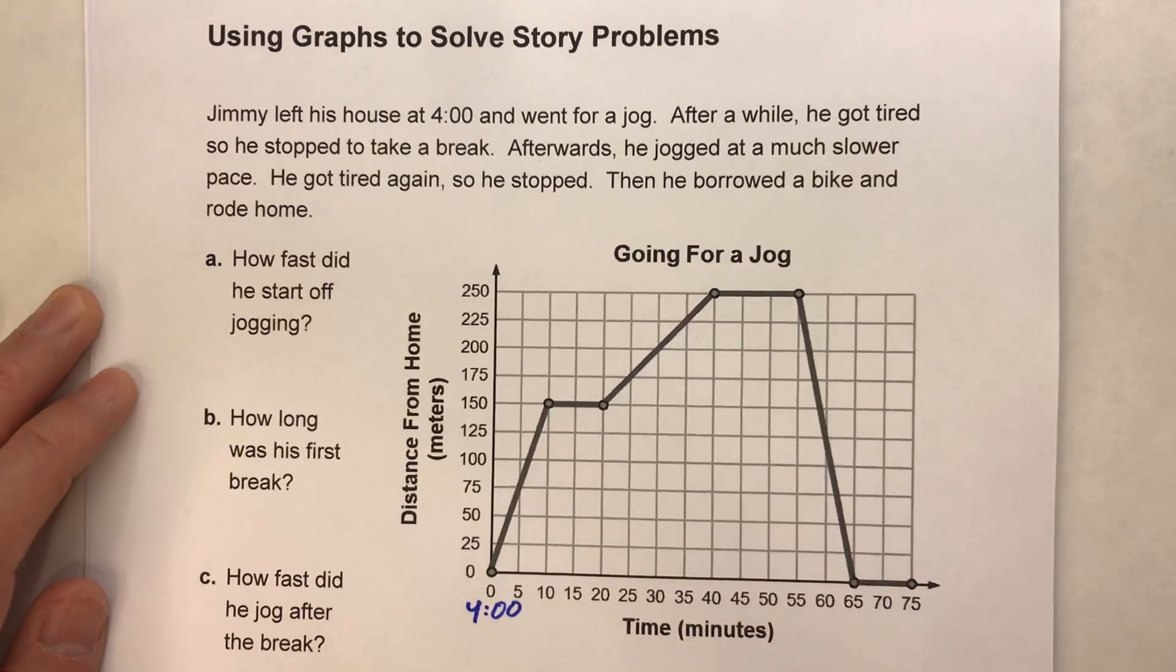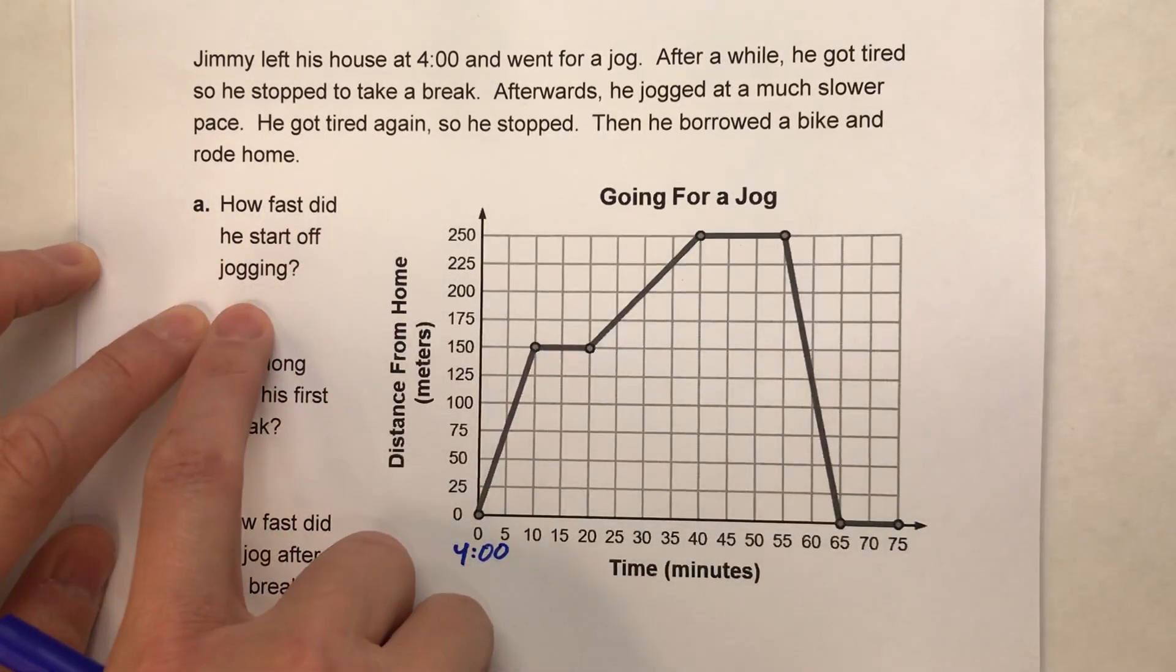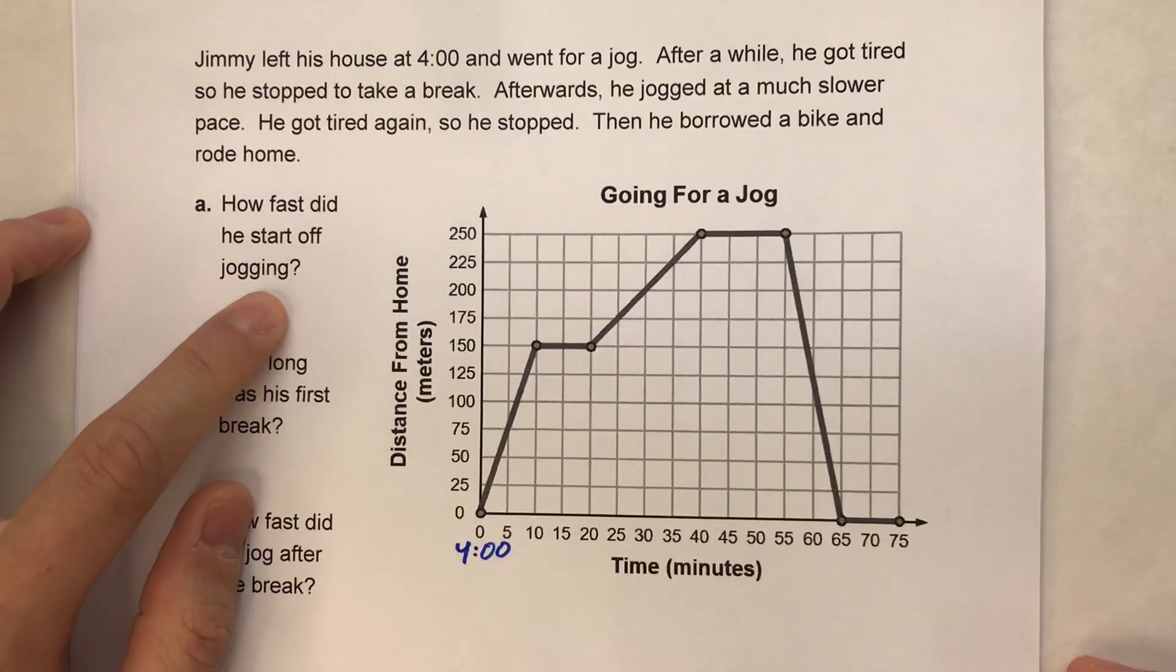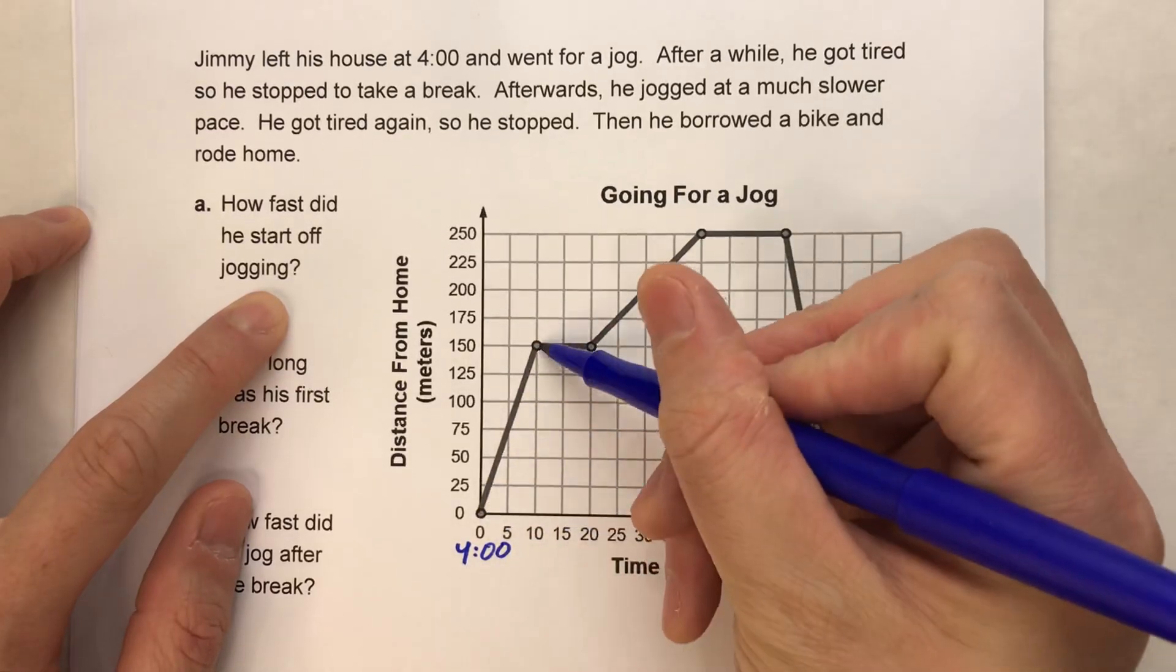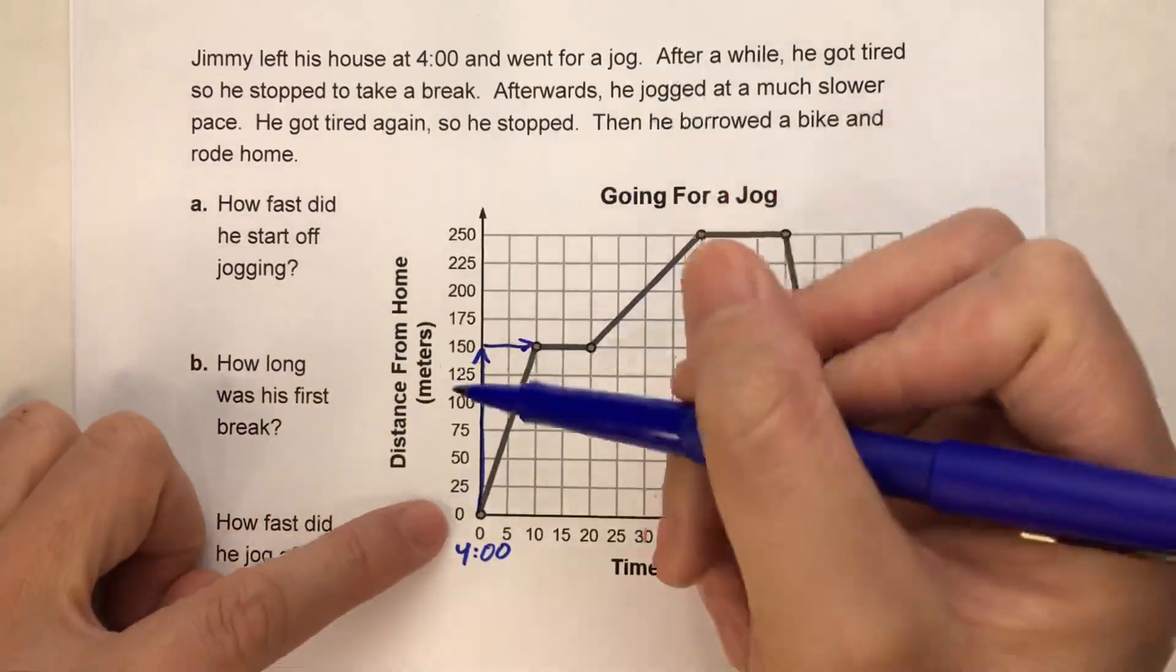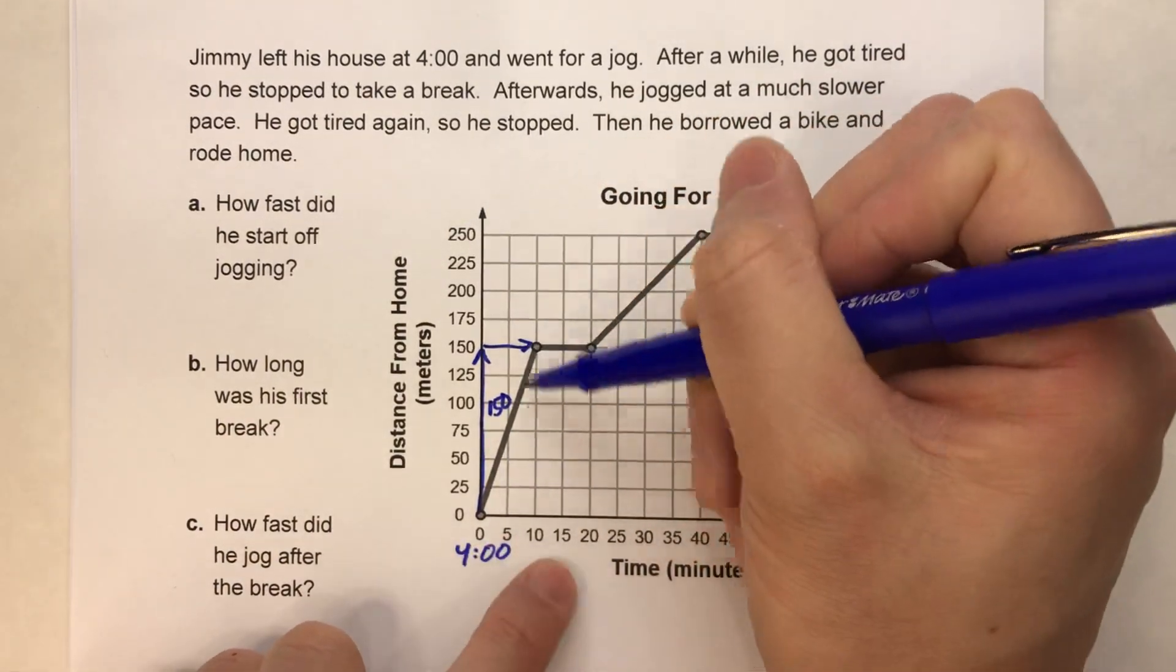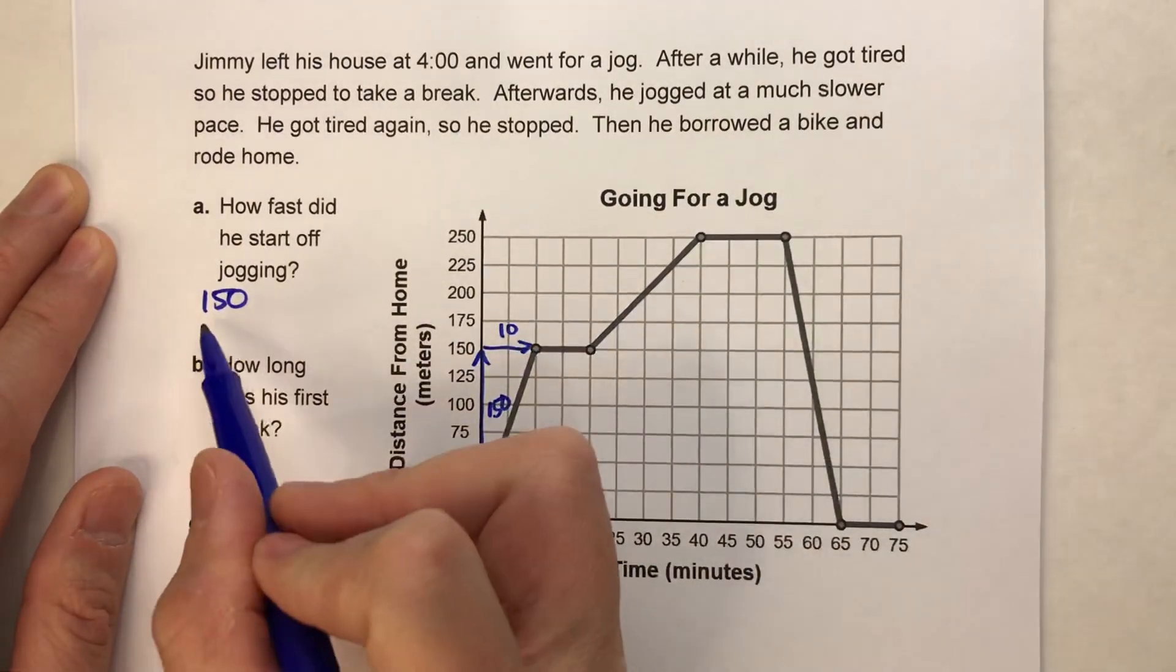Okay, so now we can start answering some questions based on that graph. For example, how fast did he start off jogging? Well, this interval here represents his starting off jogging. So if we want to know how fast he's going, what we need to do is find the slope of that line. Alright. So here's my interval. I'm going to find my rise and my run of this little interval here. And notice, it goes from 0 to 150. So it went up 150. And it went over from 0 to 10. So the run is 10. So the slope is 150 over 10.